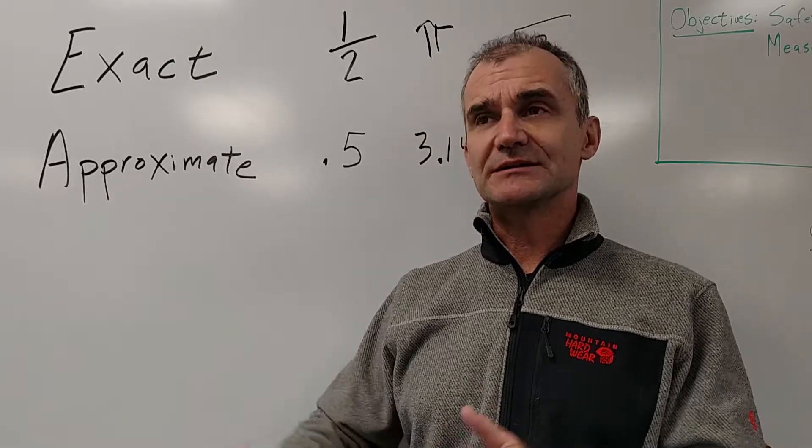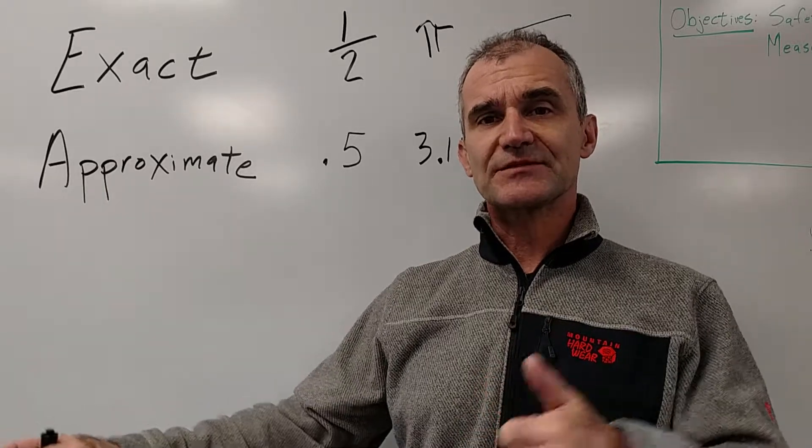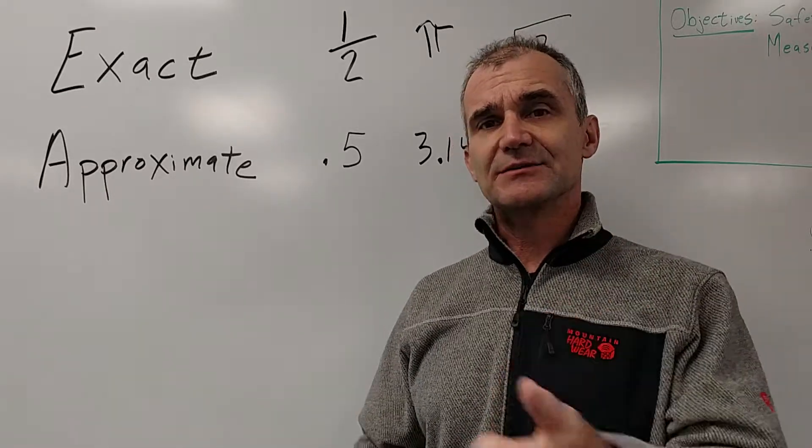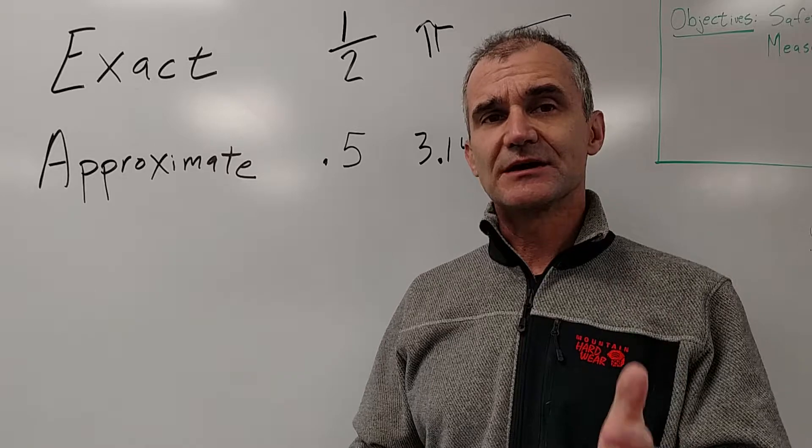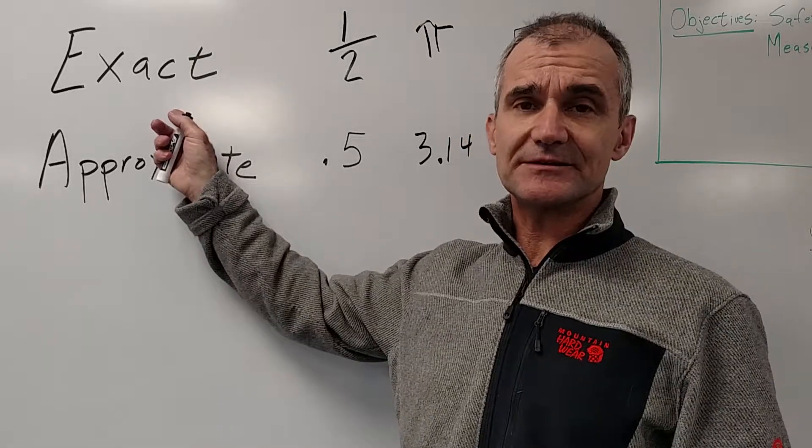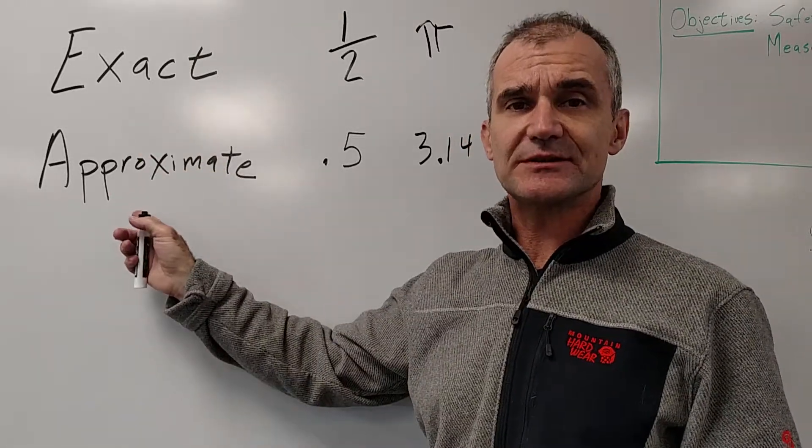So even if my length is 2 foot and I'm a 16th over, if I set up a stop block and cut my two opposing pieces on that same stop block, it will be exactly the same, even though my measurement is approximate.